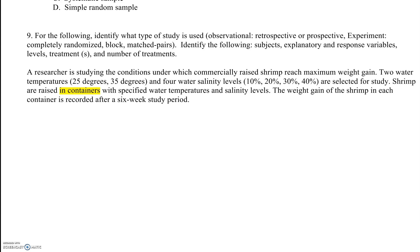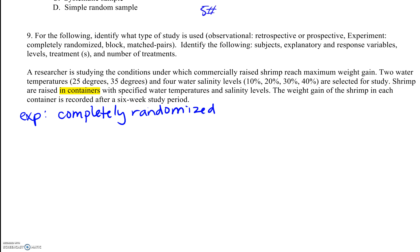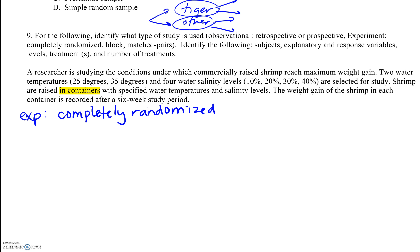This is definitely an experiment, and it appears to be a completely randomized design. If it were a block experiment, they would have divided the shrimp into groups first — by type, like tiger shrimp versus other varieties — and then assigned treatments within each block. Since there's no such grouping mentioned here, we're just doing a completely randomized experiment.